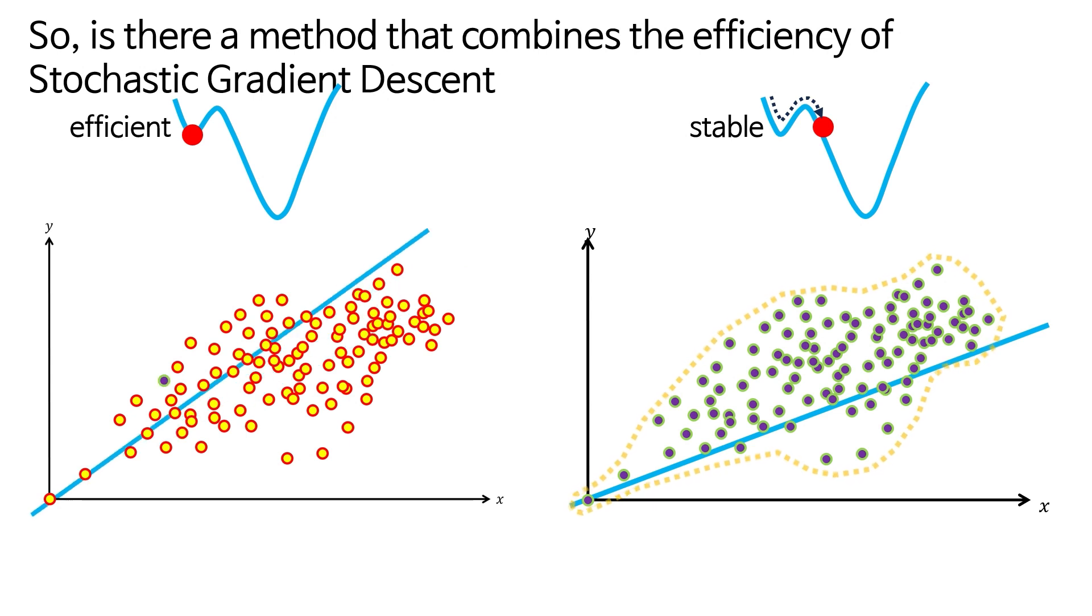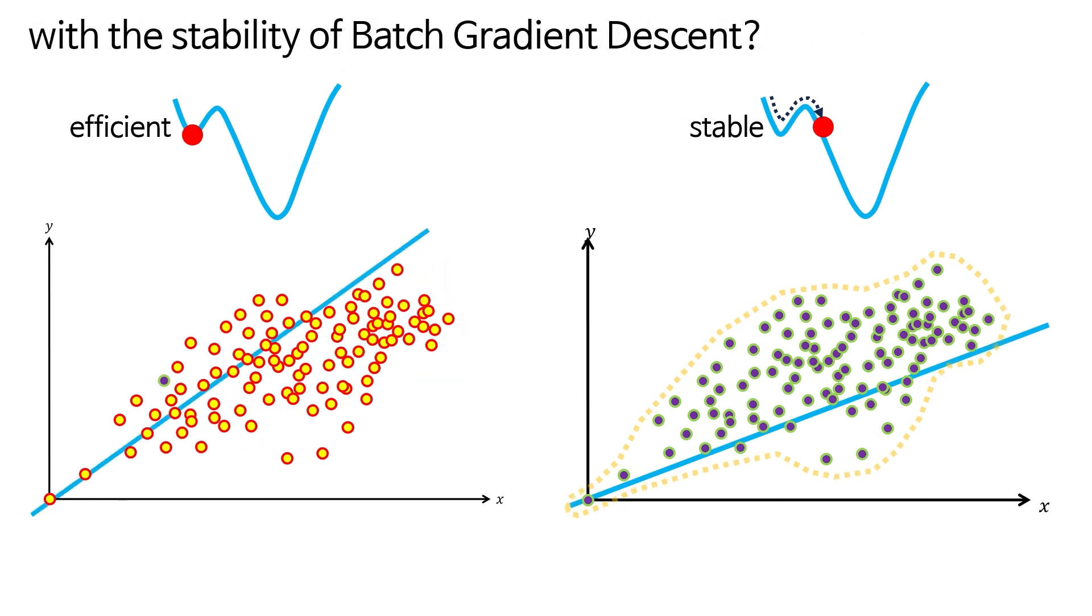So, is there a method that combines the efficiency of stochastic gradient descent with the stability of batch gradient descent?